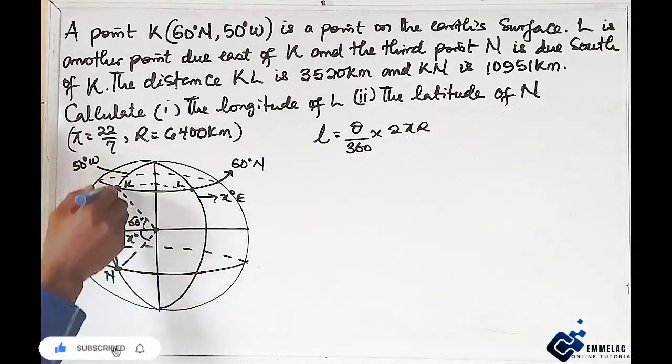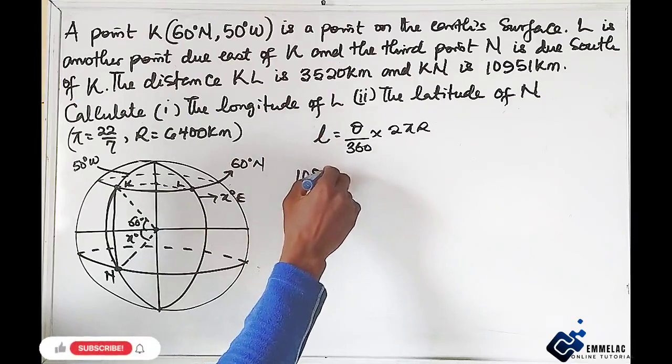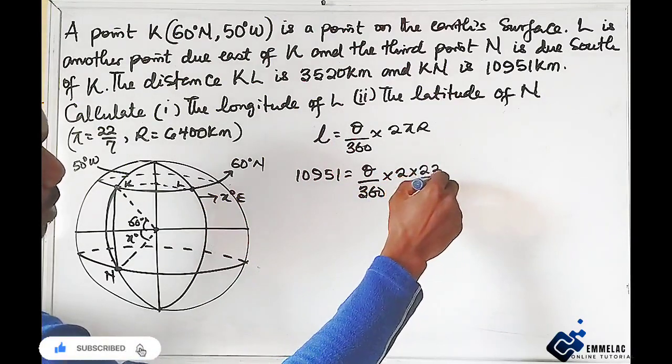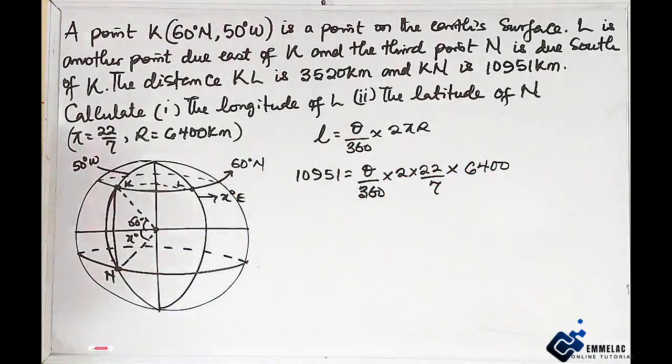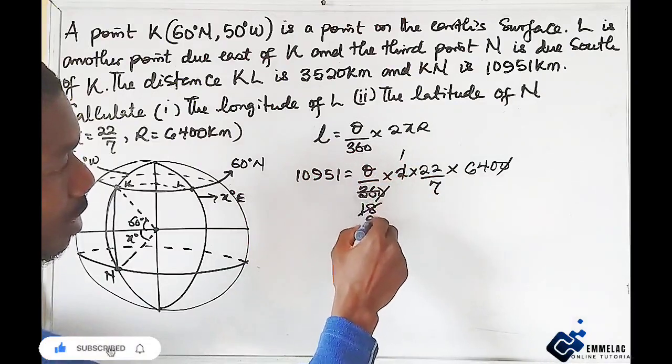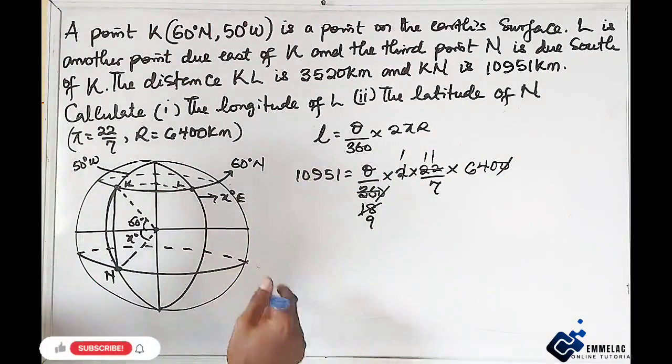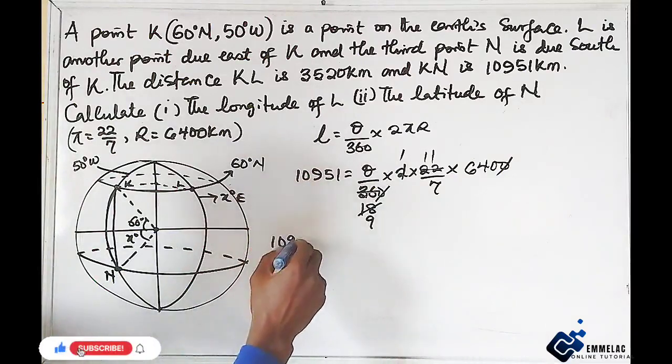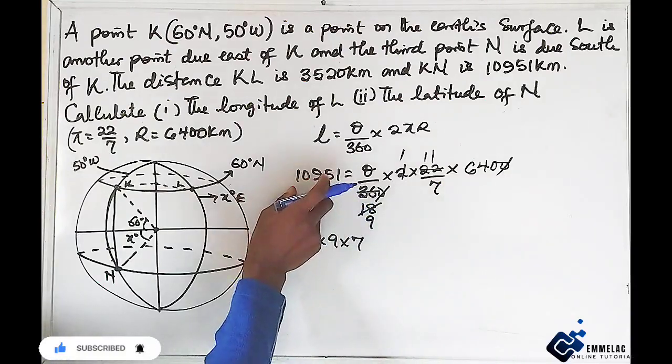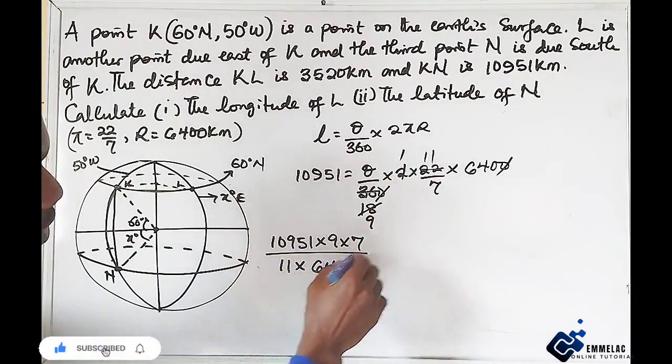Our L here is 10951 equals theta over 360 times 2 times 22 over 7 times 6400. Eliminating: 2 here gives 1, 2 here gives 1, this becomes 180, 2 here gives 9, we have 11. Cross-multiply to make theta the subject. We have 10951 times 9 times 7, that is the denominator of the right hand side multiplied through the numerator on the left hand side, then all over 11 times 640, equals theta.